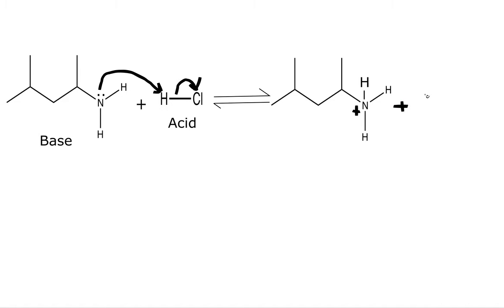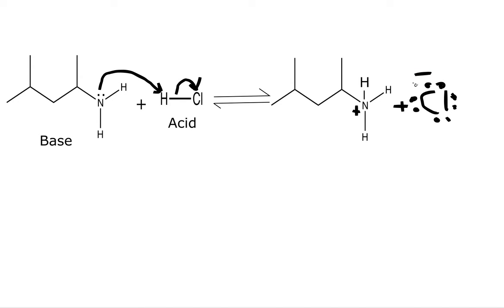Now let's draw our chlorine. Here is our chlorine anion, because we're going to put electrons on it. It has lone pairs on all sides — lone pair here, lone pair here, lone pair here, lone pair here. So this is a chlorine anion, also called chloride. It was neutrally charged and we gained electrons, which are negatively charged, so this chlorine anion has a negative formal charge.